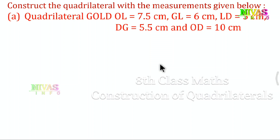What we have to draw is the quadrilateral GOLD. GOLD has 4 points: G, O, L, and D.